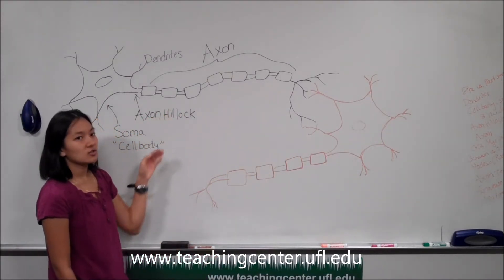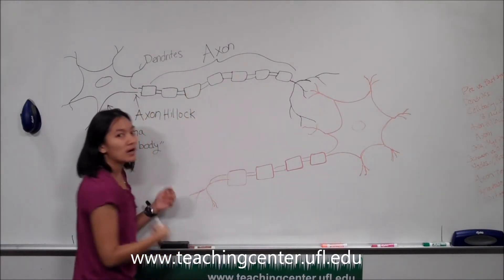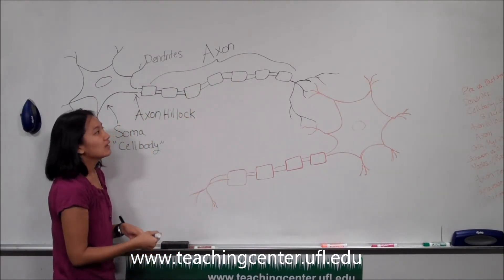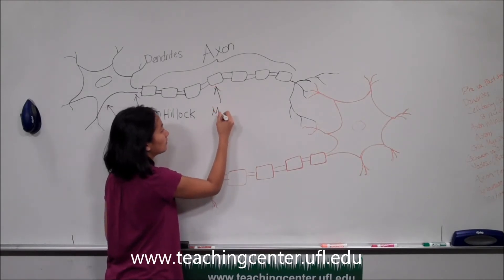Now on this axon, you can see these odd blob shapes that wrap around it in certain segments. These are known as the myelin sheaths.